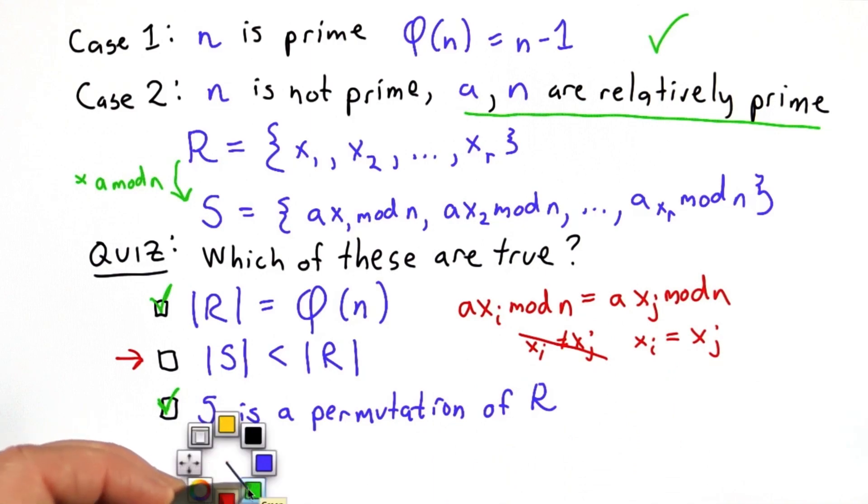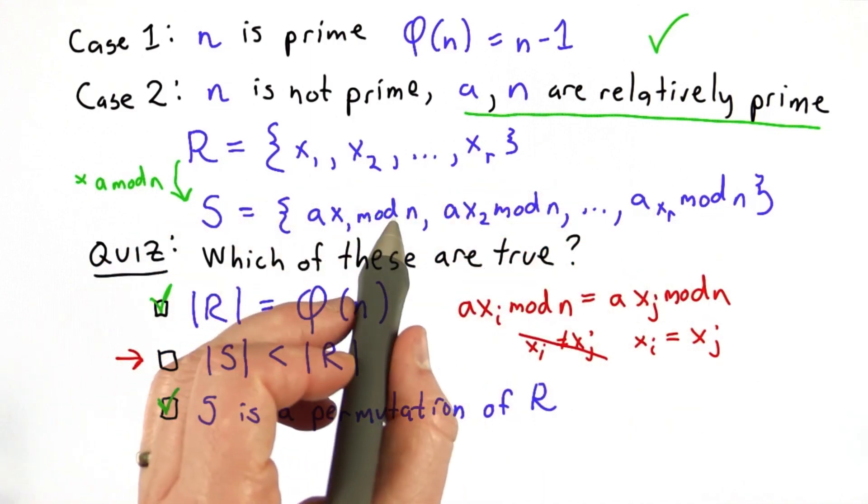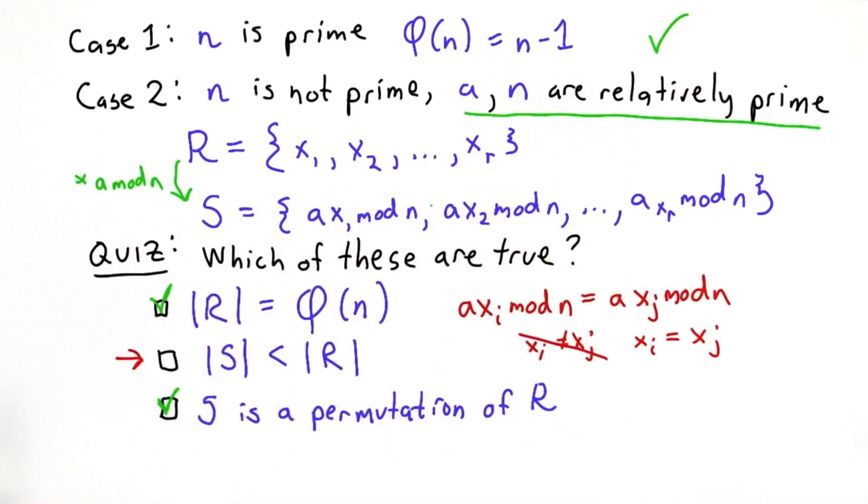That means that the sets are the same size, and this set contains numbers only up to n minus 1. This set also contains numbers from 1 to n minus 1. So that's why we know that s actually contains the same elements as r. It must be a permutation of r.